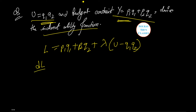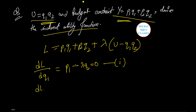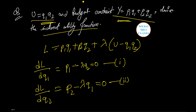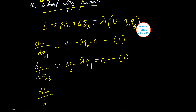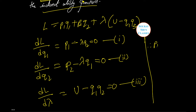Differentiating with respect to q1, q2, and λ: ∂L/∂q1 equals p1 minus λ·q2 equals 0 (equation 1); ∂L/∂q2 equals p2 minus λ·q1 equals 0 (equation 2); and ∂L/∂λ equals u minus q1·q2 equals 0 (equation 3). Taking equations 1 and 2 together gives p1/q2 equals p2/q1.